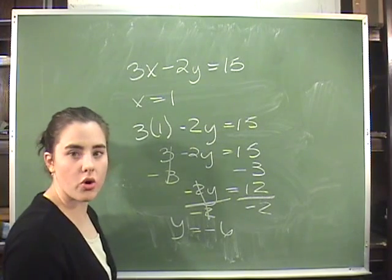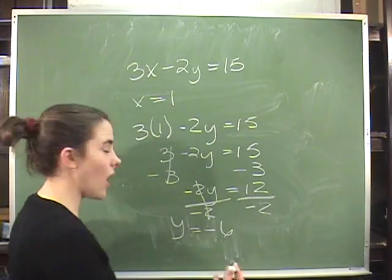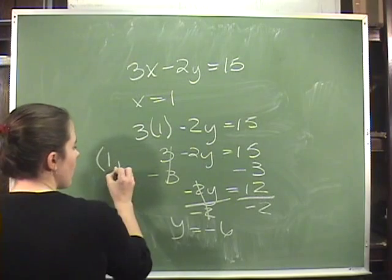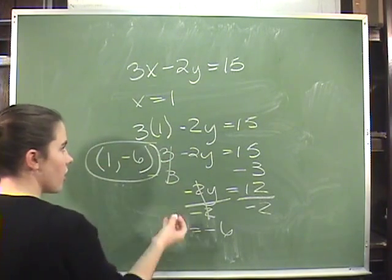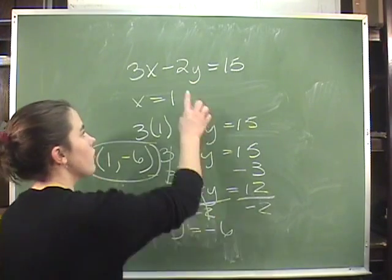You can write that as an ordered pair the same way you would write it if you were writing it on a coordinate graph with your x first and your y second. So it would be 1, comma, minus 6. Then you have an ordered pair that functions as a solution for this equation.